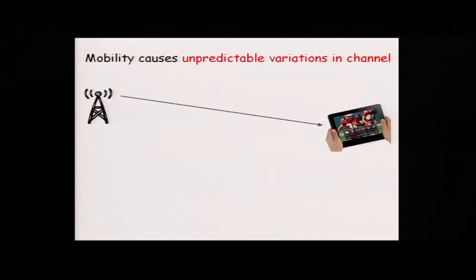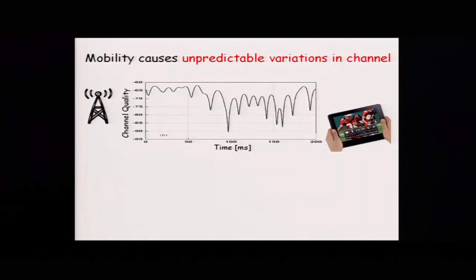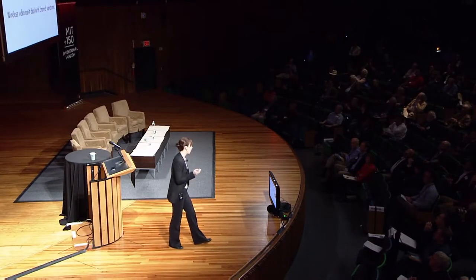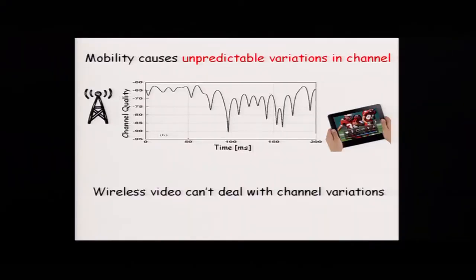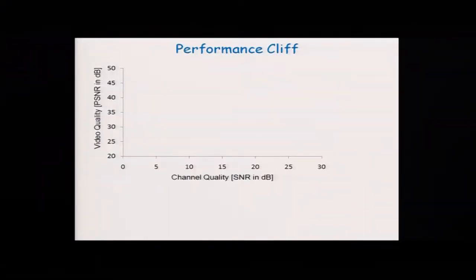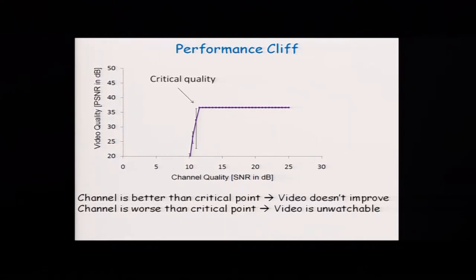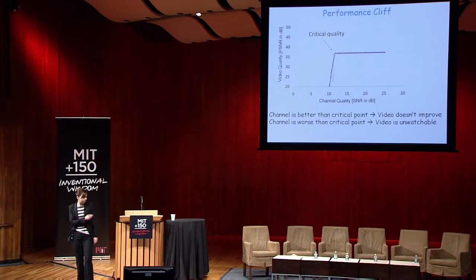If you look at the channel between transmitter and receiver as a function of time, you see it going up and down constantly — even just jittering your hand causes crazy variations. Wireless video cannot deal with such variations. In fact, wireless video suffers from a problem called the performance cliff. If you plot video quality as a function of channel quality, you see a cliff graph: the video works really well for a particular channel quality, but as the channel quality degrades, your video becomes unwatchable. This is why you get glitches and stalls.